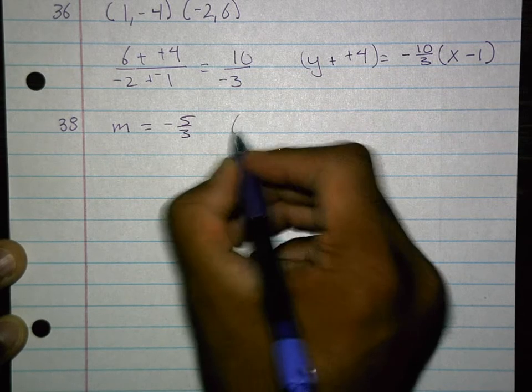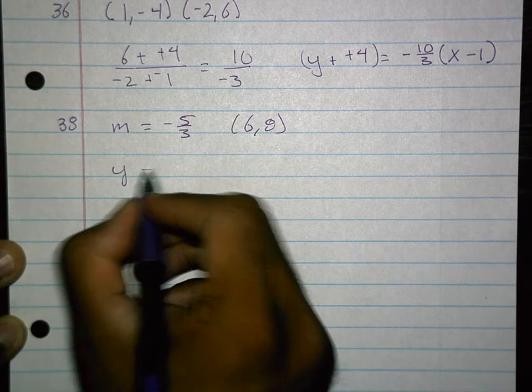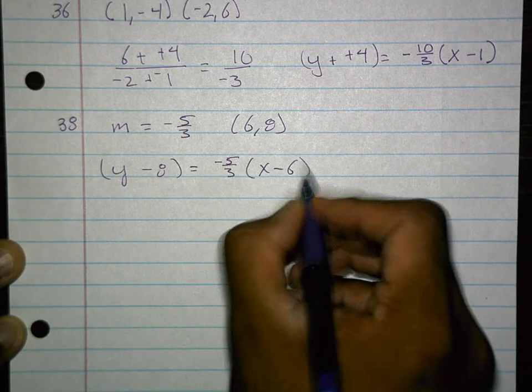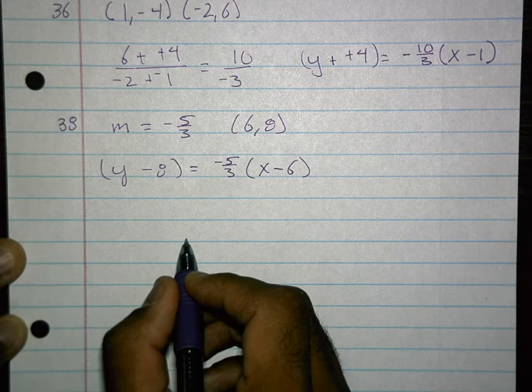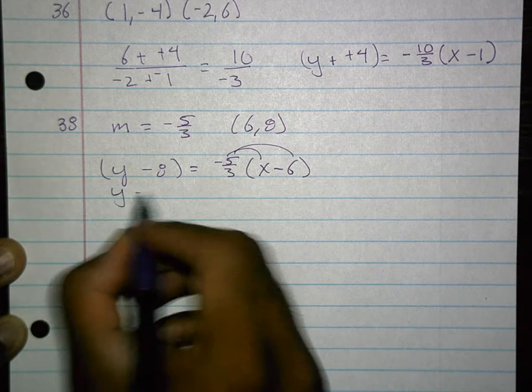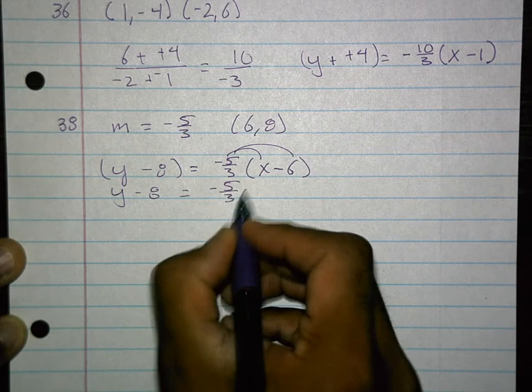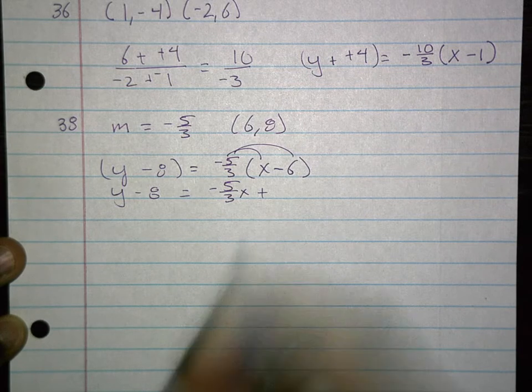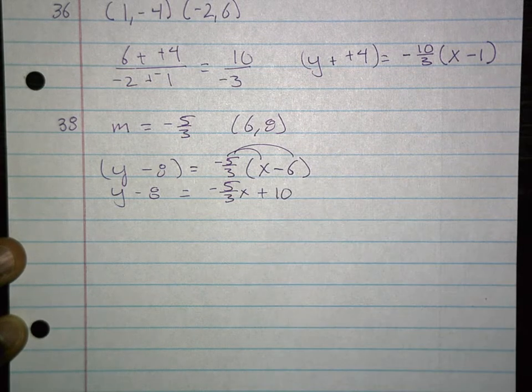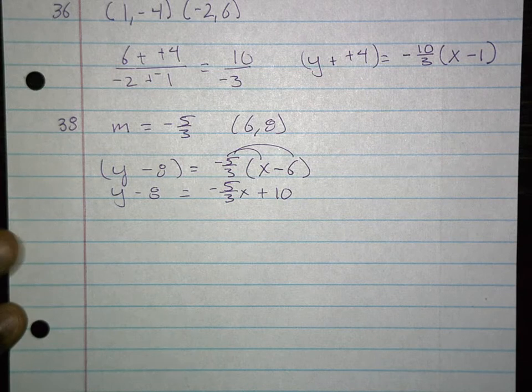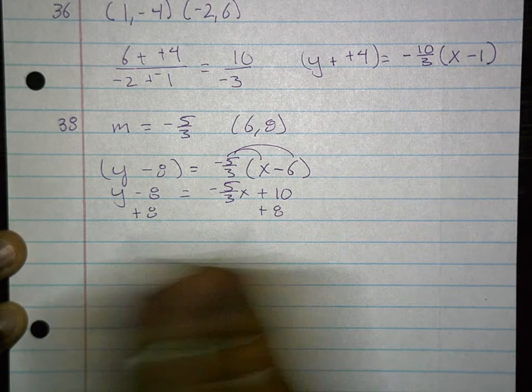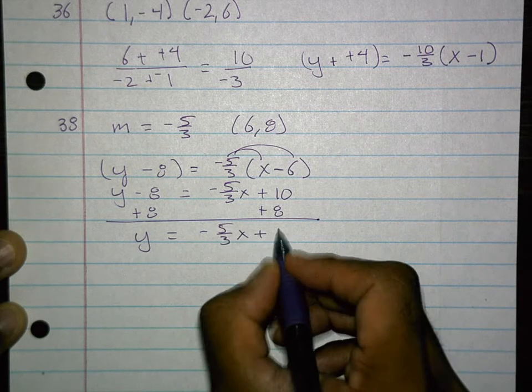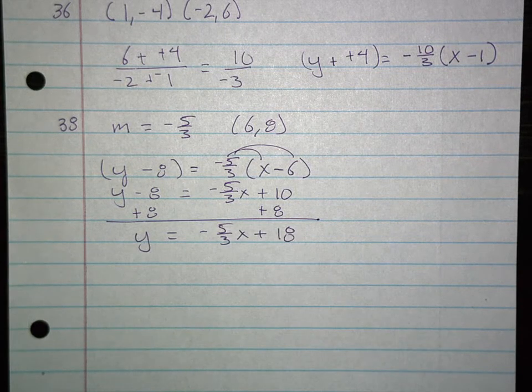So I'm going to say y minus 8 equals negative 5 thirds all over x minus 6. I'm going to distribute the slope inside. I'm looking at y minus 8 equals negative 5 thirds x plus, negative and a negative, 30 over 3 is going to give me 10. Now I'll add 8 to both sides. I'm looking at y equals negative 5 thirds x plus 18.